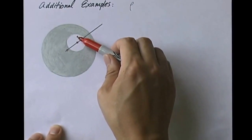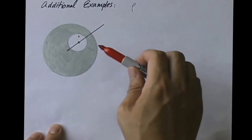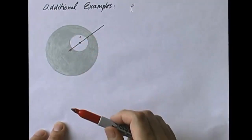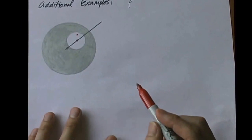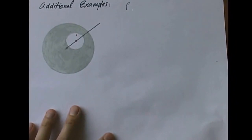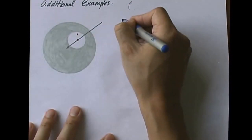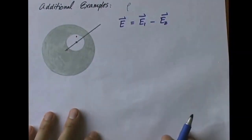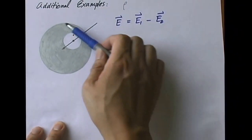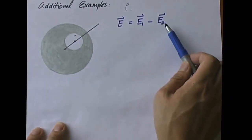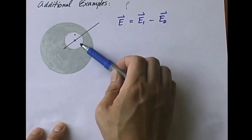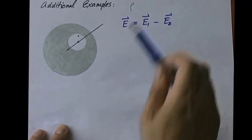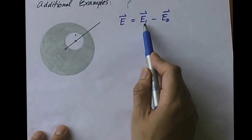You know the cavity electric field if the cavity is not present. And then we have to subtract the electric field produced by a charge density rho in this region, because in reality there is no charge there. So the electric field at this point inside the cavity equals E1 minus E2. That is the key point here. E1 is the electric field of this sphere without a cavity. E2 is the electric field of a smaller sphere of charge density rho, because that sphere does not really exist, so we take that away from E1.